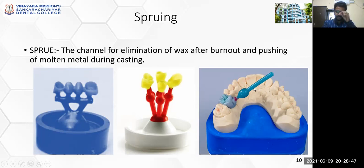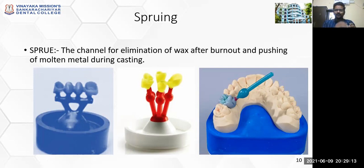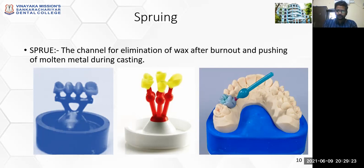Once this wax pathway is placed and investment material is poured and sets, the wax used for the fabrication of the crown must be eliminated — for that you must create a path. The sprue acts as a channel for elimination of wax after burnout, and once the wax is completely removed, this channel remains so that molten metal can be forcefully cast into the space through the channel.